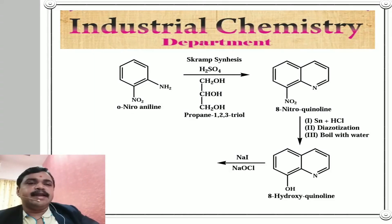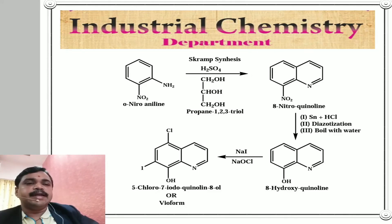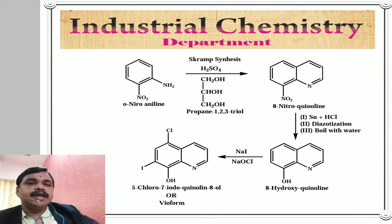The 8-hydroxyquinoline is then treated with NaI (sodium iodide) and NaOCl (sodium hypochlorite), introducing iodine at position 7 and chlorine at position 5. We thus obtain 5-chloro-7-iodo-quinolin-8-ol, also known as 5-chloro-7-iodo-8-hydroxyquinoline, whose trade name is Vioform.